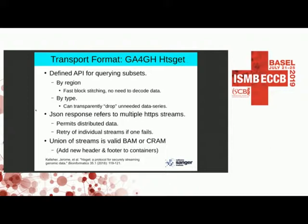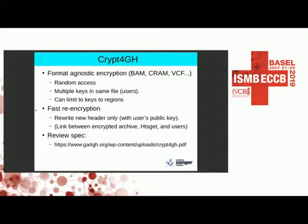CRAM itself does not have an encryption layer — we didn't want separate encryption for BAM, CRAM, and VCF. Instead, we have a wrapper called CRYP3GH. It's very flexible: it allows random access, multiple keys, and keys can be limited to individual parts of files. When an archive serves up encrypted data to users, it only needs to re-encrypt the header, not the entire file. This is currently under review, and the spec URL will be at the end of the talk.